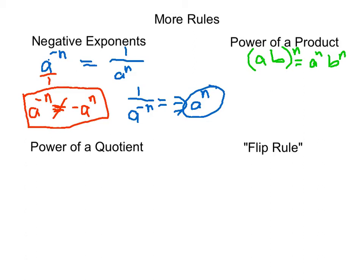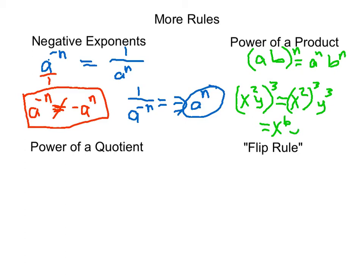For example, if we had x squared times y, that whole thing raised to the third power — we have a product being raised to the third power, so we can distribute and raise both factors to a power of 3. This gives us x squared raised to the 3, times y to the third. To simplify, when you raise a power to a power, you multiply the exponents — you don't add them. So this becomes x to the 2 times 3, which is x to the 6, times y to the third.